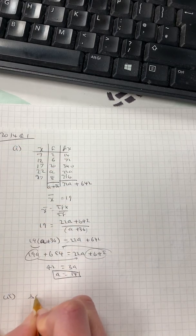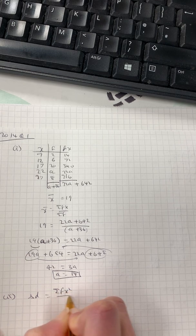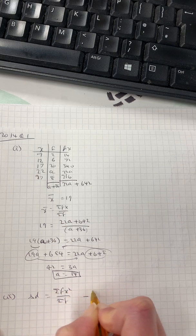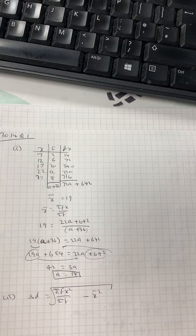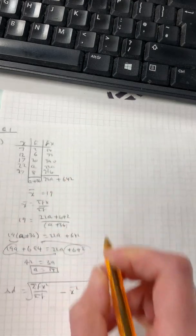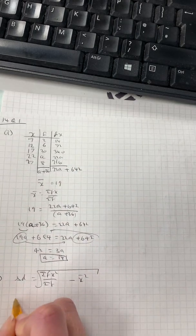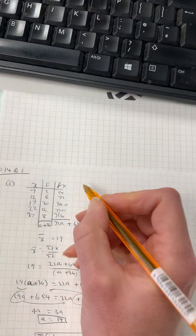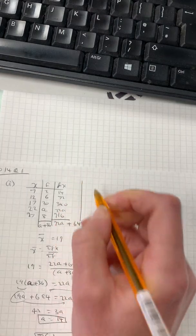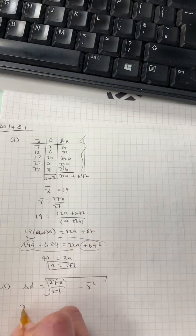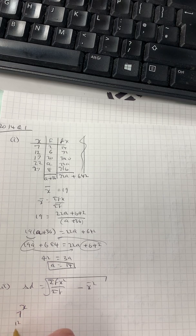The standard deviation is σfx squared over σf minus the mean squared. So I need a new column. I'll just do it at the top here. Actually, just write out the table again, just to not have the worries about that a.